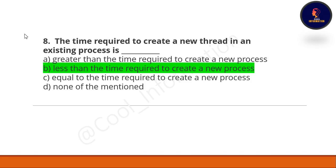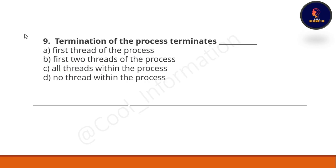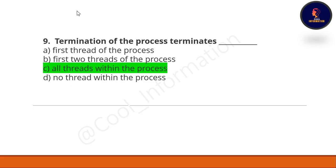Question 9: termination of a process terminates — Option A: first thread of the process. Option B: first two threads of the process. Option C: all threads within the process. Option D: no thread within the process. The correct option is C — all threads within the process.